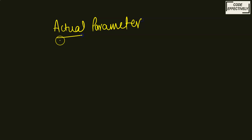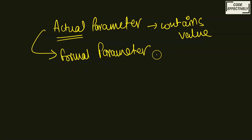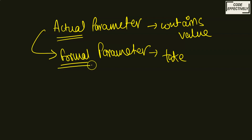What exactly are actual parameters? Actual parameters, as the name suggests, are those that actually contain a value — they own a value. Formal parameters, on the other hand, contain the value that is being passed by the actual parameter. They don't have any other value of their own; they take the value from the actual parameter. That's why they are known as formal parameters, because they don't have their own original value — they have to borrow or take a value from the actual parameter.